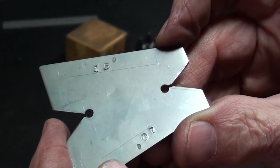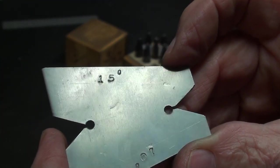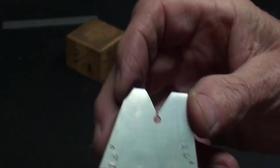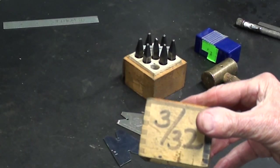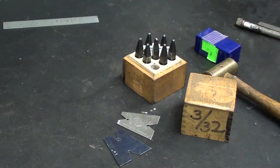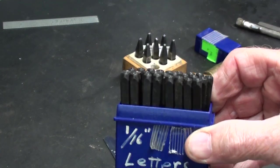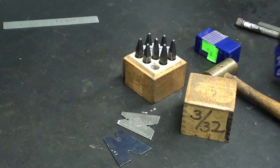But the best this old shop teacher can do, 15 degrees on one side and 10 on the other. And I use 3/32nds numbers and 1/16th letters, with the zero being the degree mark.